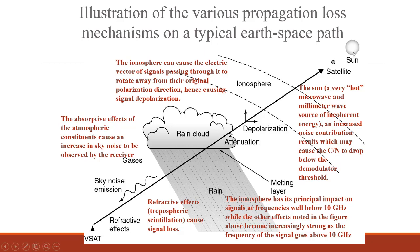The sun is a very hot microwave and millimeter wave source of incoherent energy, which increases noise contribution and may result in increased C/N at the receiver. Absorptive effects occur when water contents and atmospheric constituents — such as oxygen and various atmospheric gases — absorb signal strength, increasing sky noise observed by the receiver. Refractive effects include tropospheric scintillation and also cause signal loss. The ionosphere has its principal impact on signals at frequencies below 10 GHz, while other attenuation and absorption effects become increasingly strong above 10 GHz.